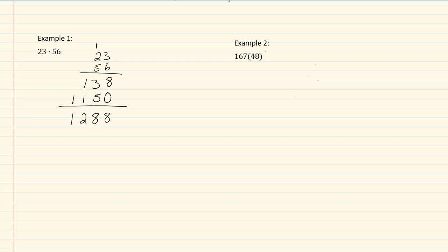In example 2, we have 167 with a 48 in parentheses. Again, this means multiplication. So I need to rewrite this as 167 with a 48 underneath.